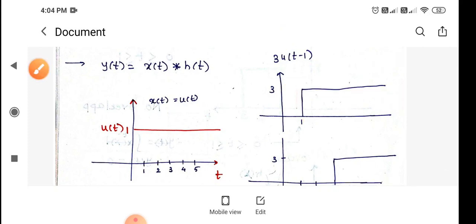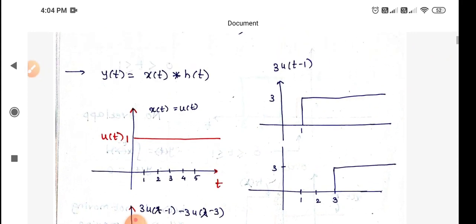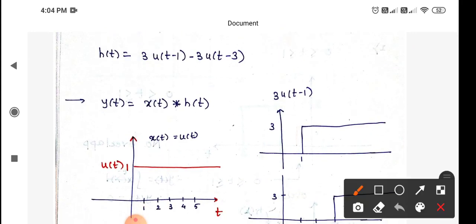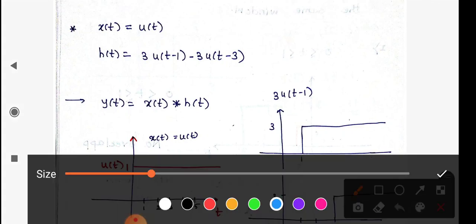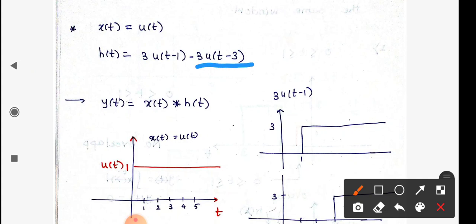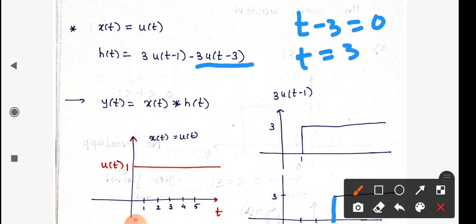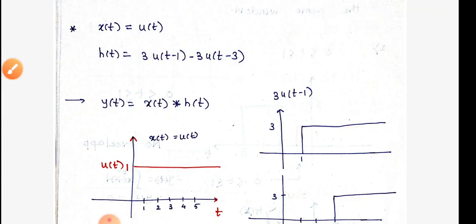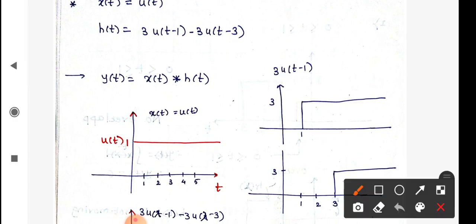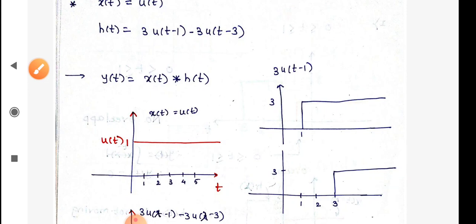For the second part, I draw u(t minus 3): setting t minus 3 equals 0 gives t equals 3, so the signal starts from t equals 3. This part is also multiplied by 3, so it is scaled by a factor of 3. But my job is not done because this second part is subtracted from the first.